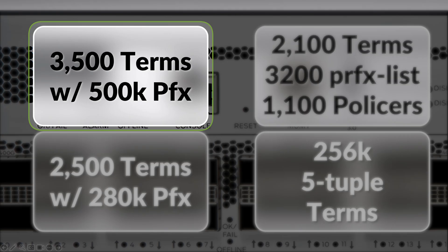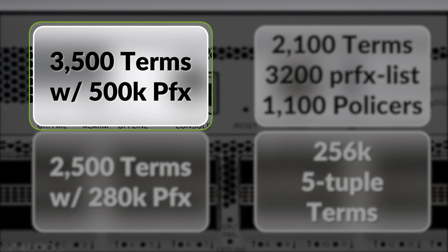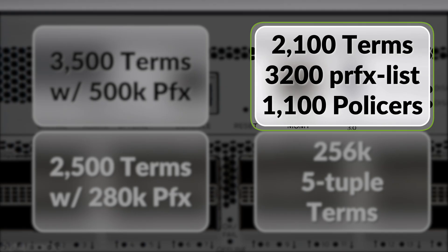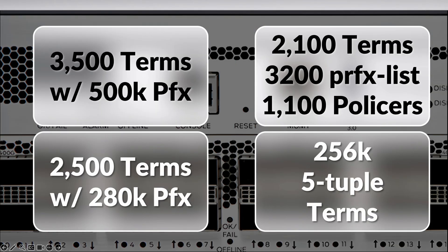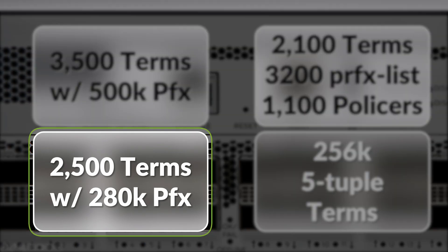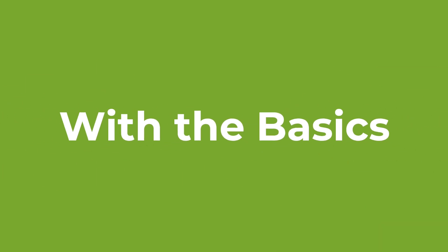How can we implement a filter with over 3,500 terms and more than 500,000 prefixes? Or a filter with fewer terms but using a large number of unique prefix lists — more than 3,000 in this case? Or even a very specific filter used to offload a firewall flow table on a router with more than 225,000 unique 5-tuple entries? These are just a few examples of customers using MX or PTX routing products, demonstrating the power of Juniper routing solutions in data plane filtering.